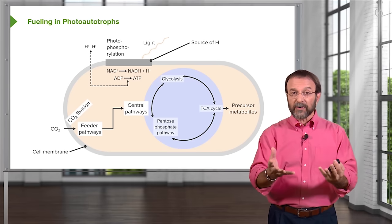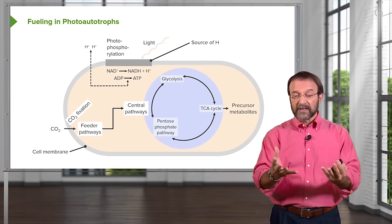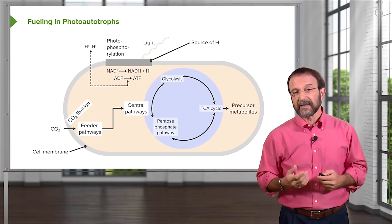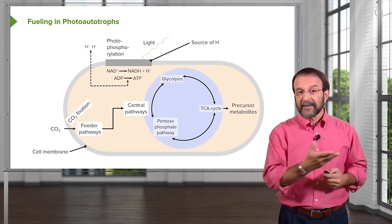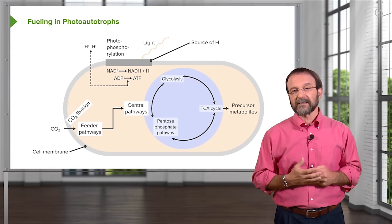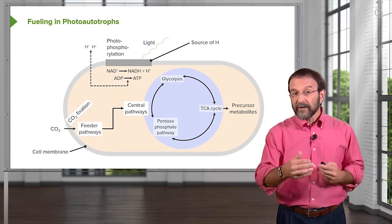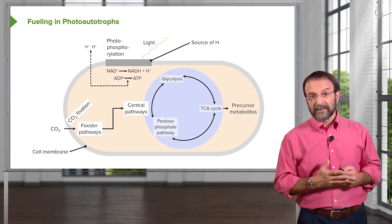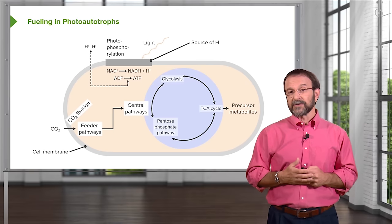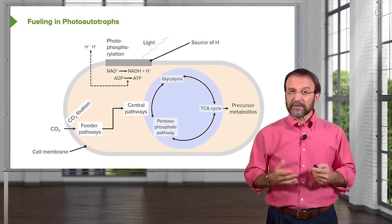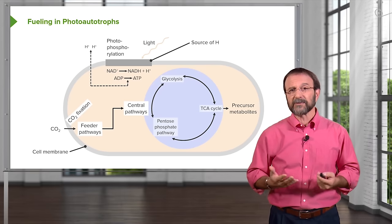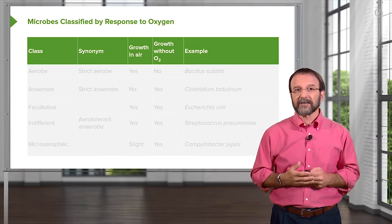And finally, the photoautotrophs. They use light to make energy in the form of ATP or NAD. They import carbon dioxide and make all the precursor metabolites that they need — very much like the chemoautotrophs, except that here light is used to make energy. So three remarkably different, flexible, and versatile ways to build new bacteria.